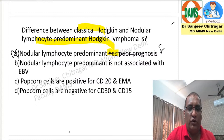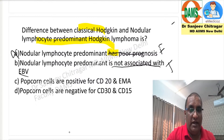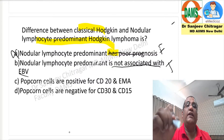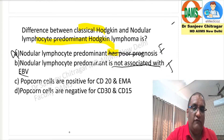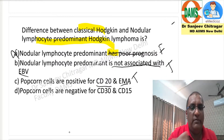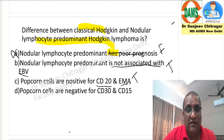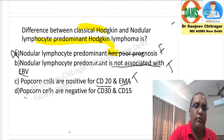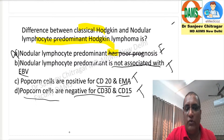Nodular lymphocyte predominant is not associated with EBV — this is a true statement, and it distinguishes between the classical Hodgkin lymphoma and the nodular lymphocyte predominant. Popcorn cells are positive for CD20 and EMA — this is a true statement and it also differentiates between them. And popcorn cells are negative for CD30 and CD15 — this is also a true statement.